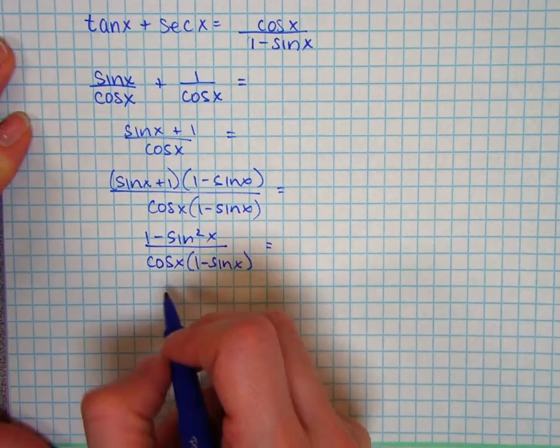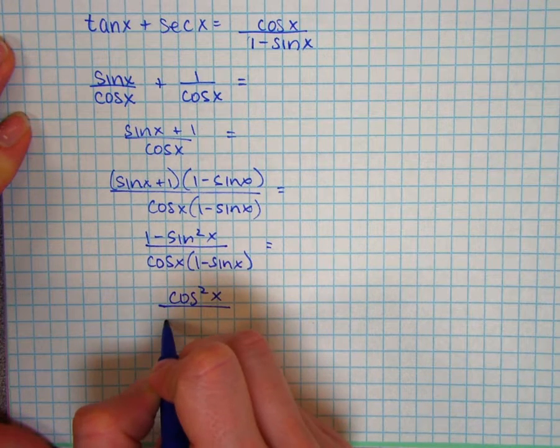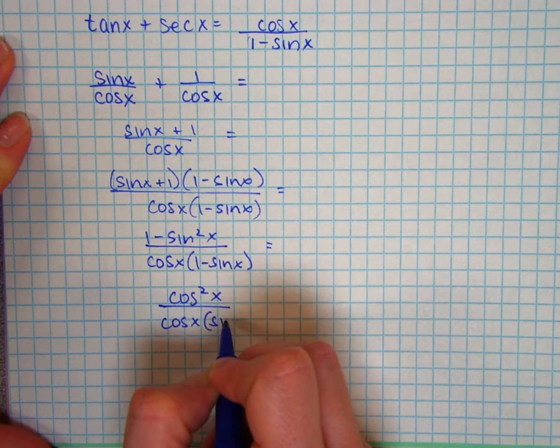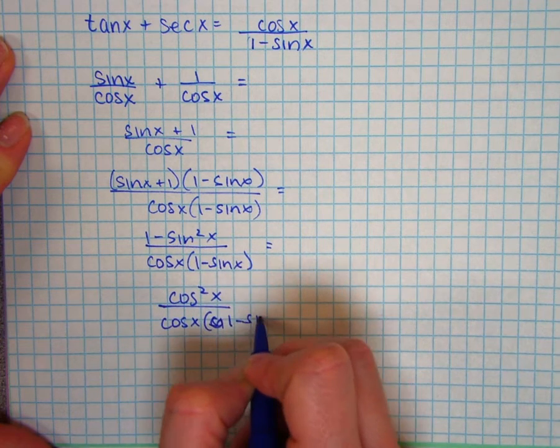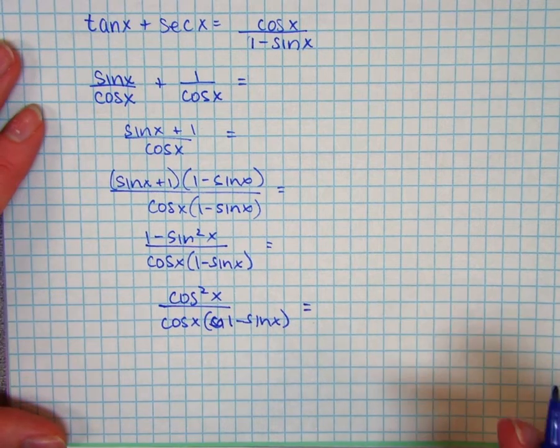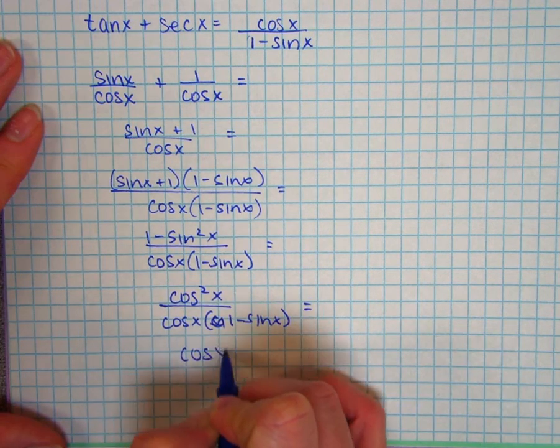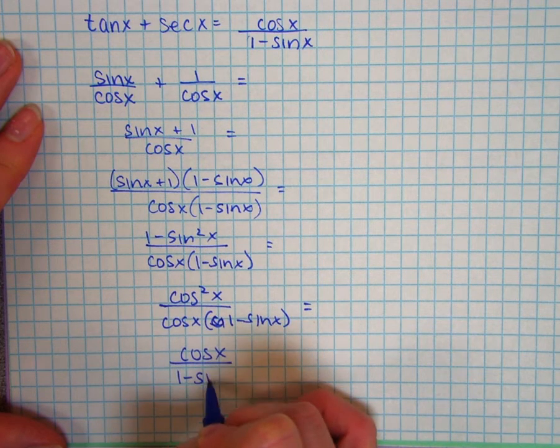The numerator can become cosine squared of x. The denominator stays as it is, excuse me, 1 minus sine of x. One cosine in each of the numerator and denominator can cancel to give me cosine of x over 1 minus sine of x.